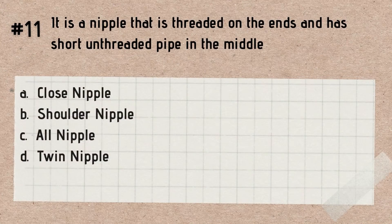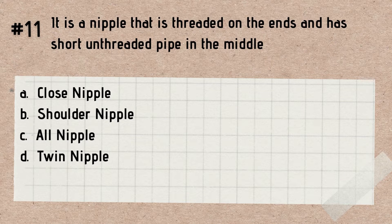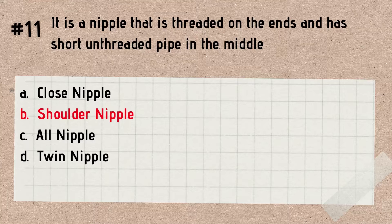Question number 11. It is a nipple that is threaded on the ends and has short unthreaded pipe in the middle. A. Close nipple. B. Shoulder nipple. C. All nipple. D. Twin nipple. Answer: Shoulder nipple. A shoulder nipple is a nipple that is threaded on the ends and has short unthreaded pipe in the middle.